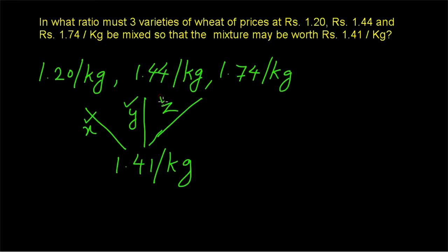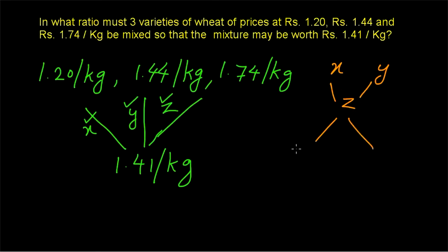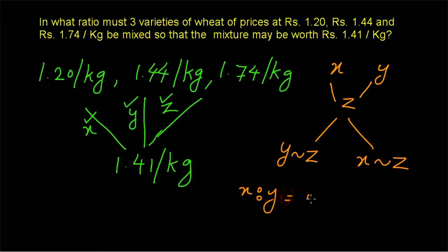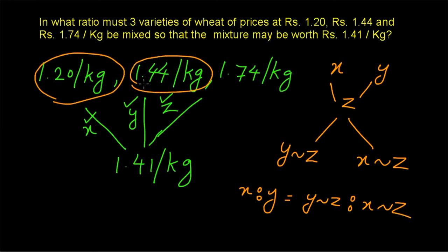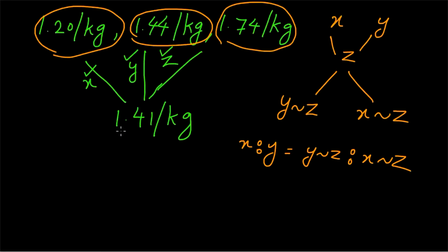So what is X, what is Y, and what is Z? Or what is X to Y to Z? That is our question. We know that when 2 ingredients are mixed together, suppose when X and Y are mixed to form Z, then X to Y can be found by the ratio of the difference between Y and Z to the difference between X and Z. But here we are having 3 quantities, so how do we apply the rule of allegation?